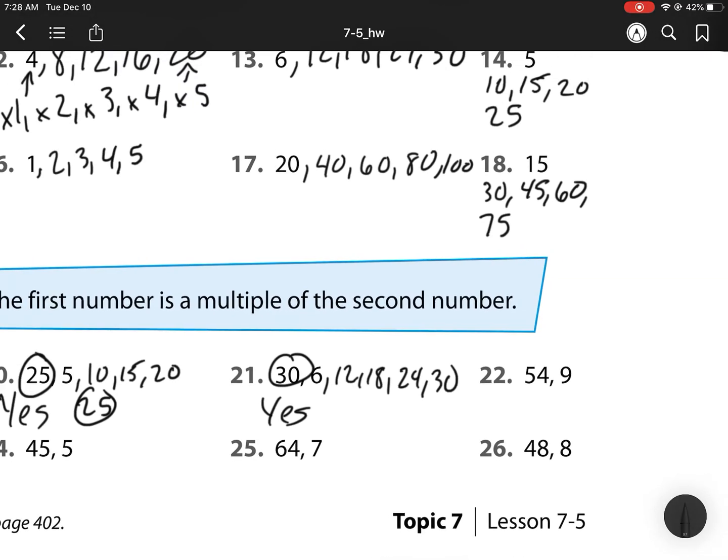For 22, let's try something different. Can we think of 9 times something equals 54? Well, that is 6. 9 times 6 is 54. So, 22 is a yes.